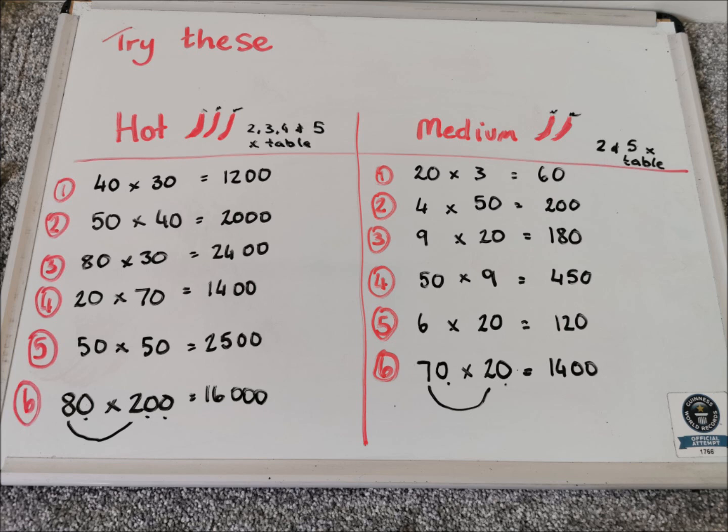Let's go on to medium. So the first one, 20 times 3 is 60. 4 times 50 is 200. 9 times 20 is 180. 50 times 9 is 450. 6 times 20 is 120.